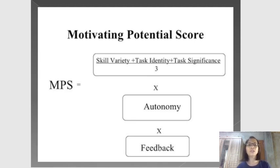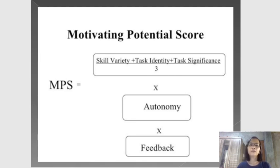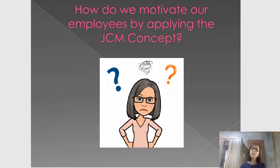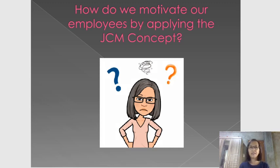How do we use these five core dimensions? The higher the score on these five core dimensions, the higher the motivation of the employees. We have the MPS, or Motivating Potential Score, with a formula: skill variety plus task identity plus task significance, divided by three, multiplied by autonomy and feedback. When all of these are high in a certain job, motivation is also high. The real challenge is how to motivate employees by applying the JCM concept, because most employees resign because they're not motivated.